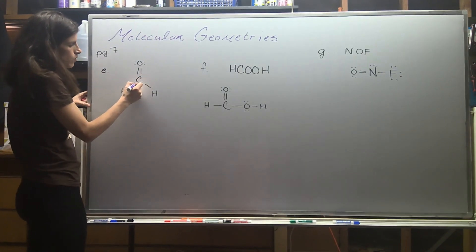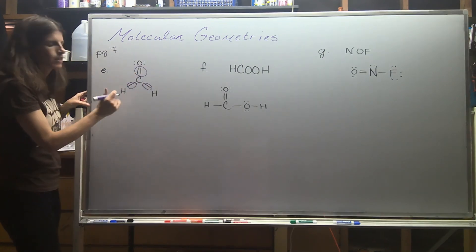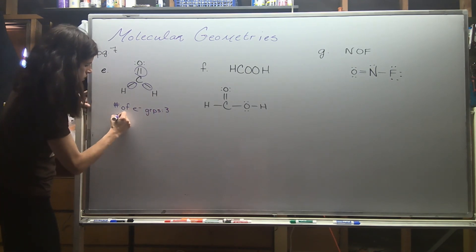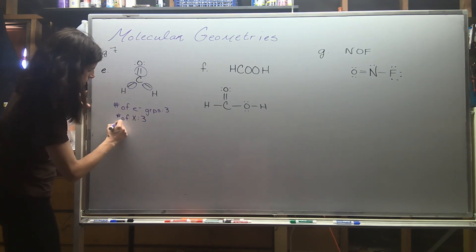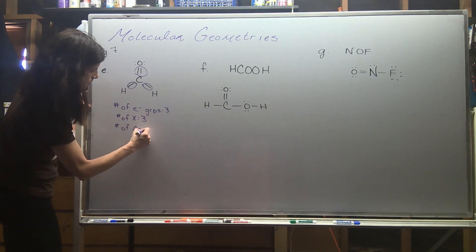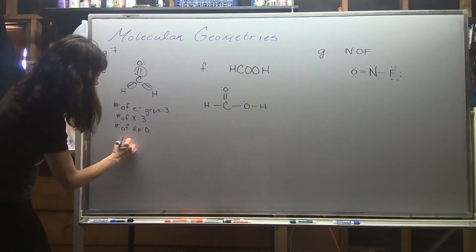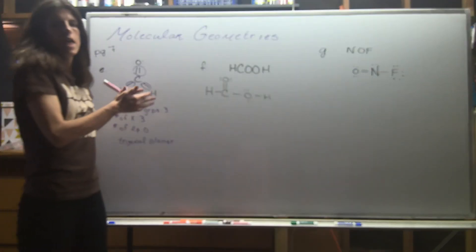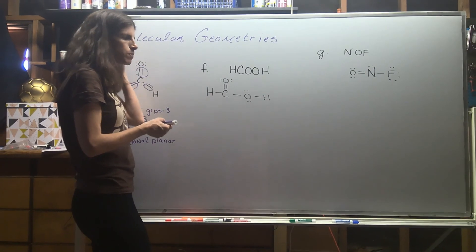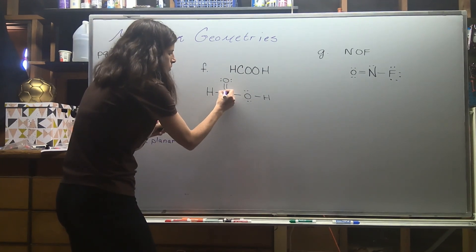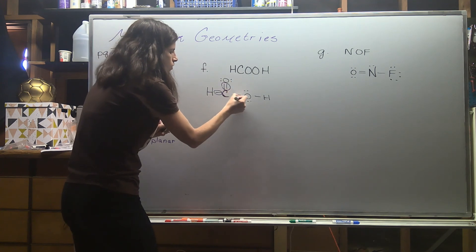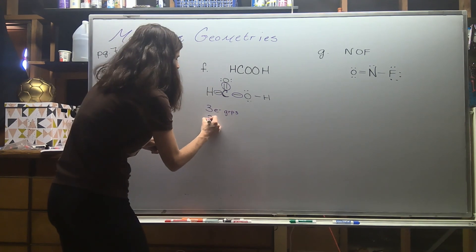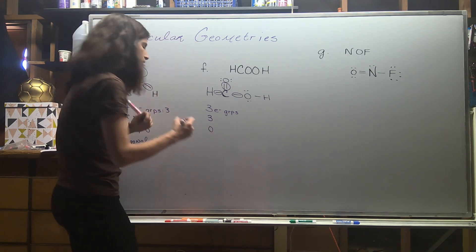Carbon is our central atom with three electron groups surrounding it. They're all involved with bonding and we have zero lone pairs. The 3-3-0 combination is going to be a trigonal planar molecular geometry. Next, we have a carboxylic acid with two central atoms. Starting with the carbon: three electron groups, all involved in bonding, zero lone pairs — 3-3-0, trigonal planar once again.